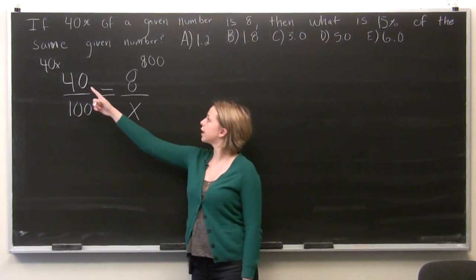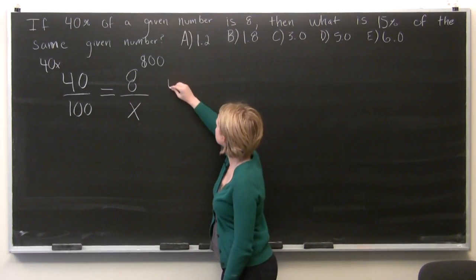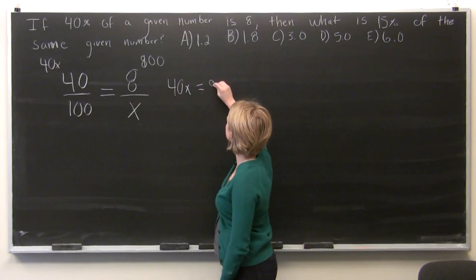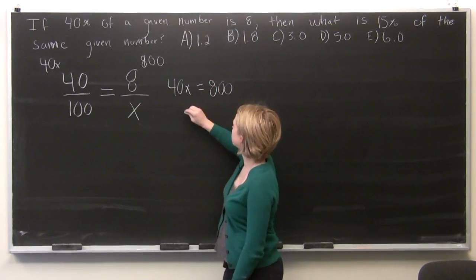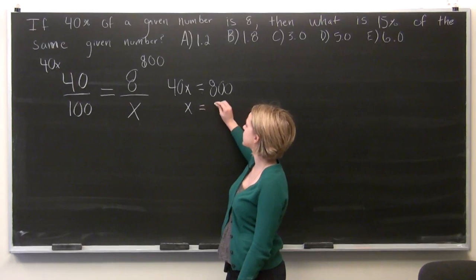So what we have is 40x and 800. Set those two terms equal to each other and divide by 40 on both sides to get that x is equal to 20.